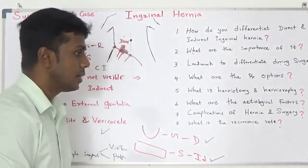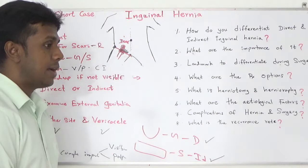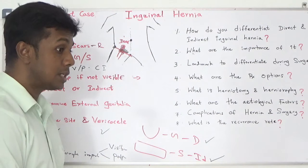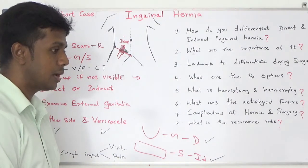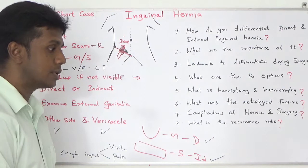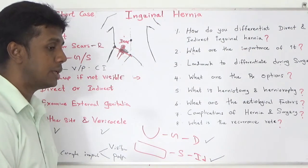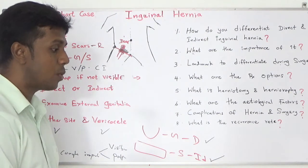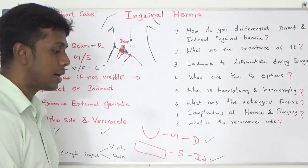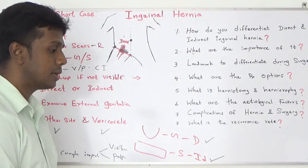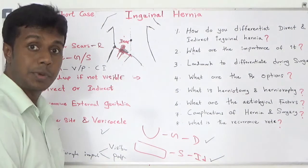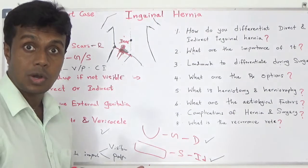Then go on to present your findings. For example: 'This patient has a globular-shaped lump in the right inguinal region.' At the end, you would say: 'I would like to offer him surgery under spinal anesthesia.' That is how you are going to present.